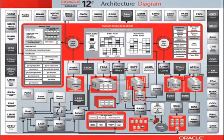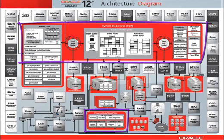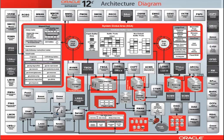The diagram also depicts the two main memory areas used by the Oracle Database instance, the SGA and PGA, associated with their important structures. This is the end of the presentation. Thanks for watching.